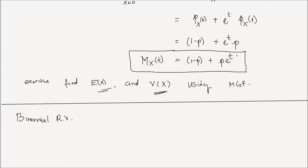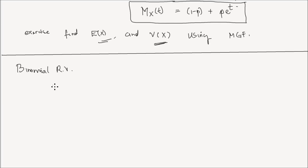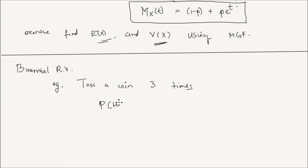To explain what a binomial distribution is, I'm going to start with an example: toss a coin three times. Note that each of the three trials are independent of each other — if I observe heads in my first coin toss, that outcome does not affect the probability of observing heads or tails in the next coin toss. The probability of heads in each of the three trials is equal to p; for a fair coin, p equals one half.